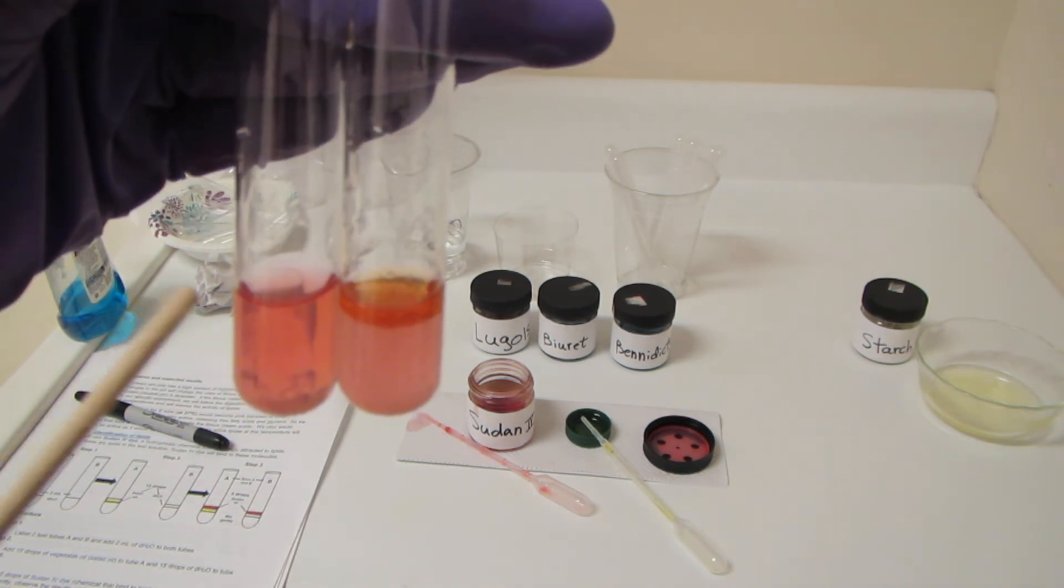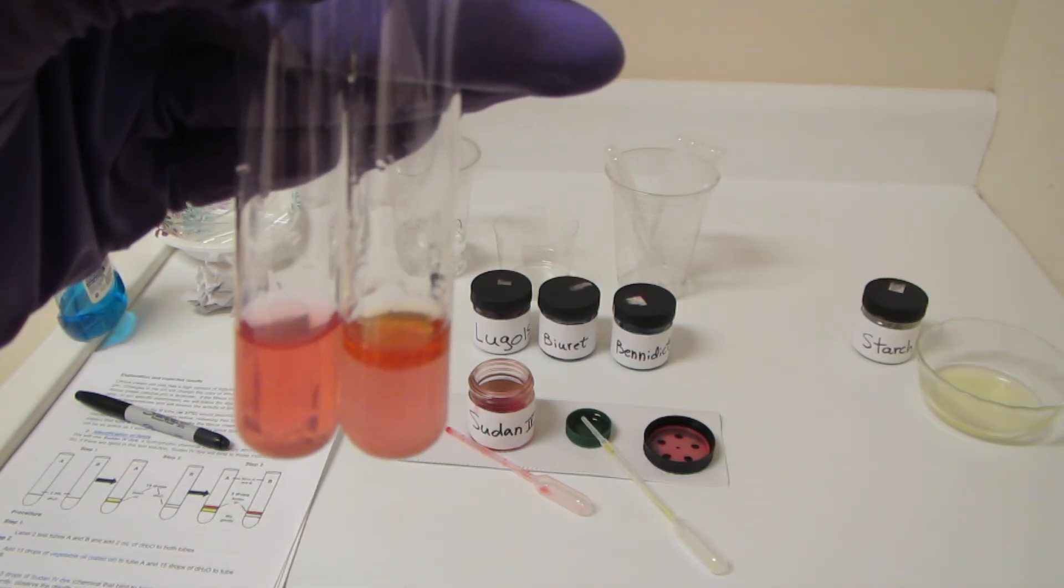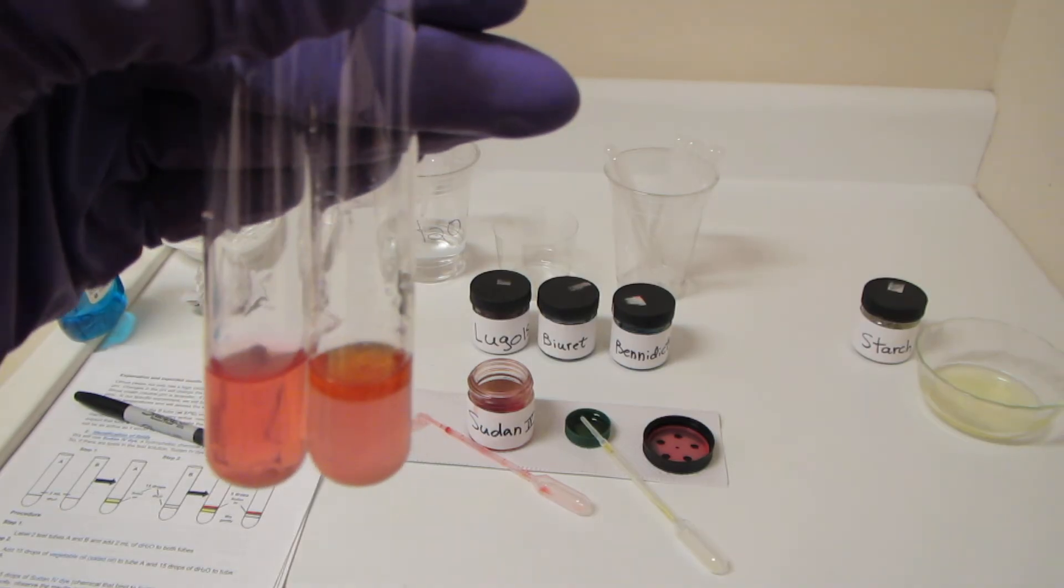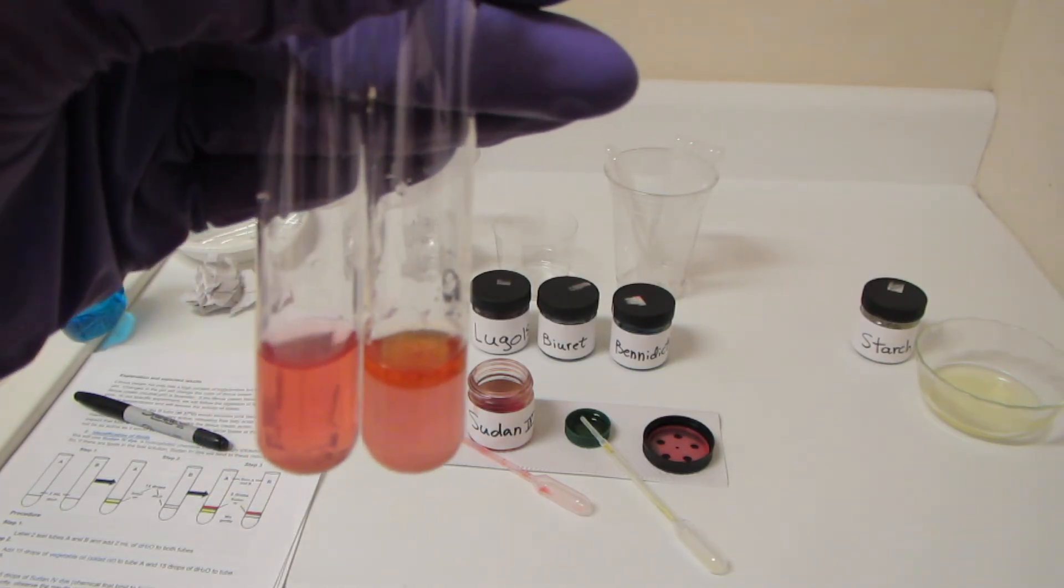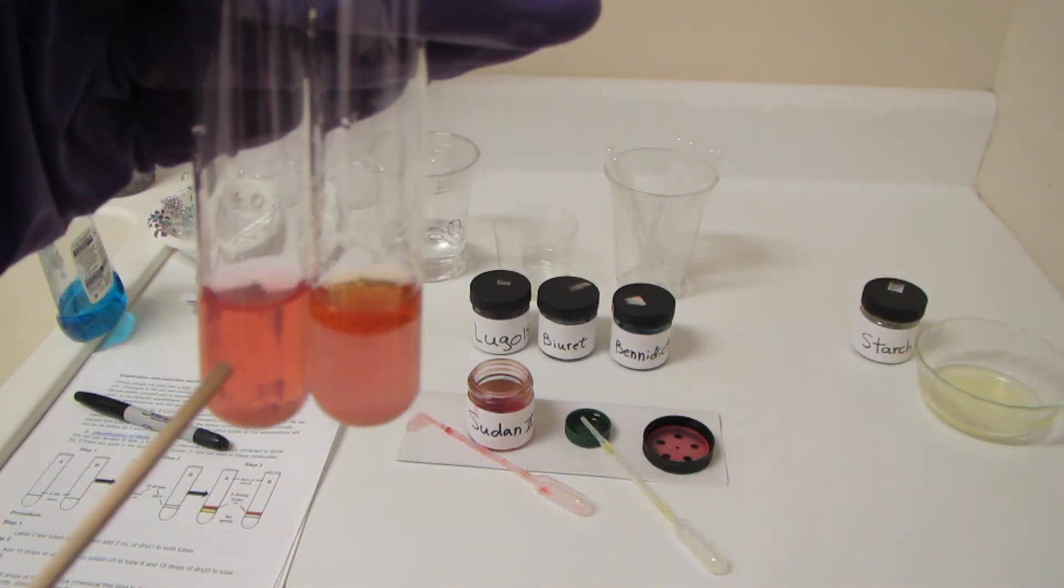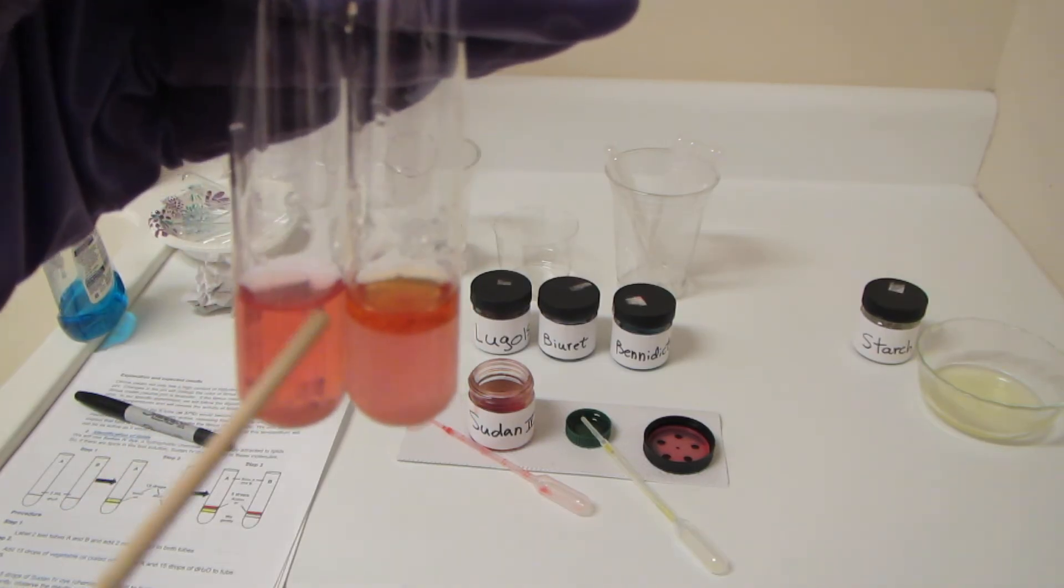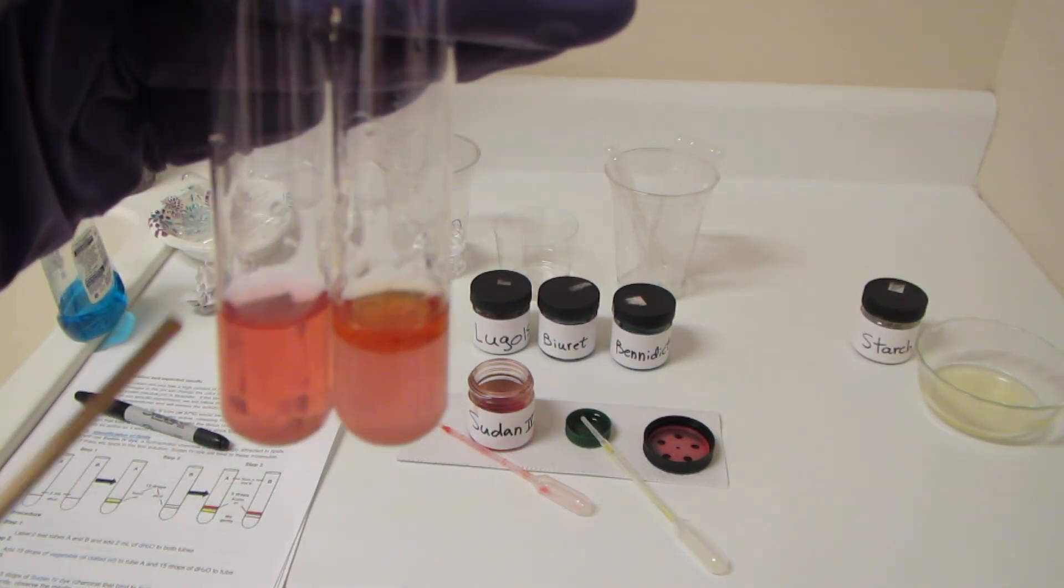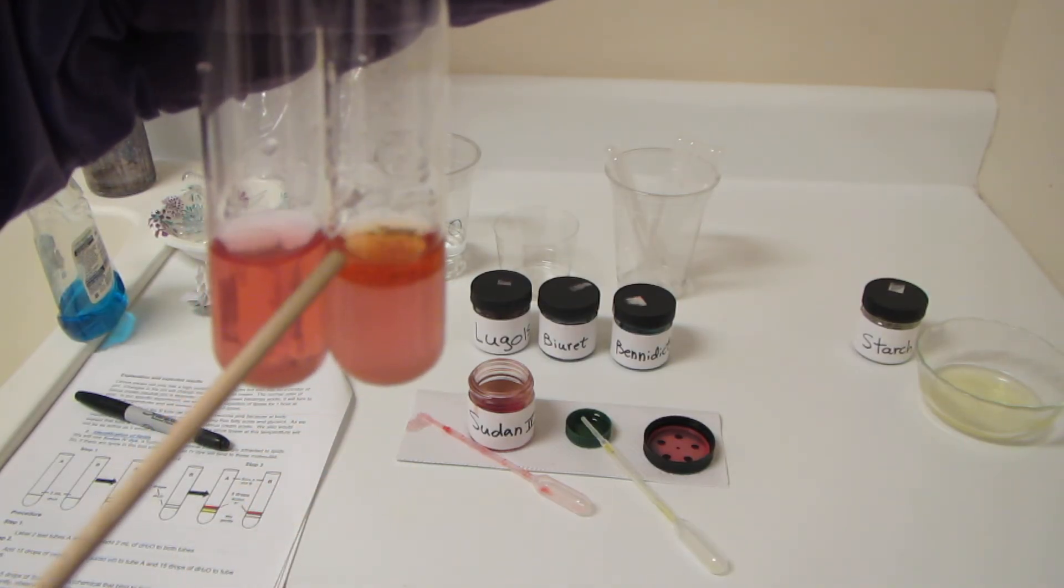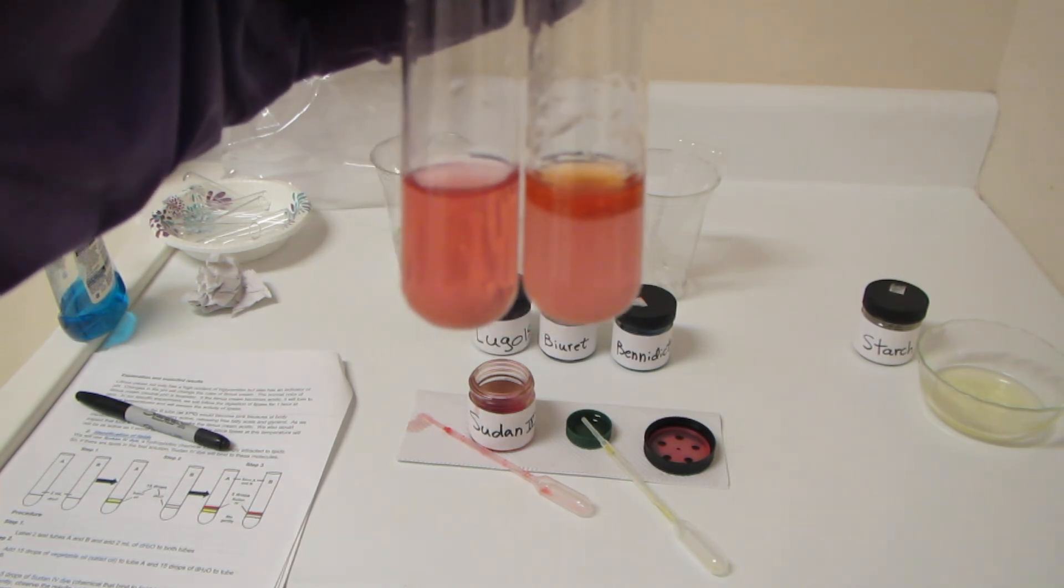Sudan 4 is what we call a fat-loving dye. It's what you would call lipophilic. It loves fat, so it's going to preferentially go up here into the fat. Whereas down here, there's no fat, so it's just basically spread out throughout the water. But over here, it's preferentially going up into the fat, so we're getting that beautiful magenta mark there.